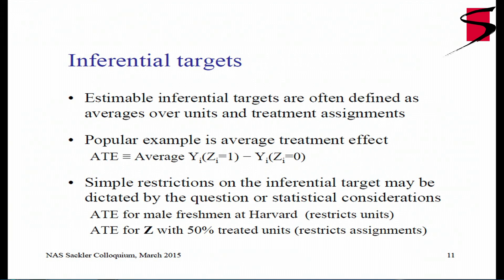That individual-level inferential target is not estimable — it's very hard to get at with one randomization. Estimable inferential targets are often defined as averages over units and over treatment assignments. One popular example is the average treatment effect, or ATE, defined as an average of individual treatment effect differences over units and randomizations. We can impose simple restrictions on this average — for example, the ATE of private tutoring for male freshmen at Harvard restricts the set of units, or the ATE for treatment allocations with 50% treated restricts the assignments.